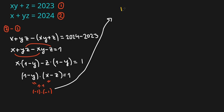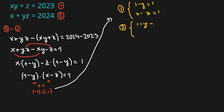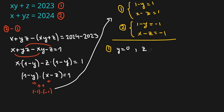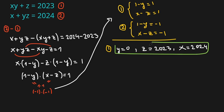The first case is 1 minus y equals 1, and x minus z equals 1. From this, y equals 0, z equals 2023, and x equals 2024. This is the result from the first case.